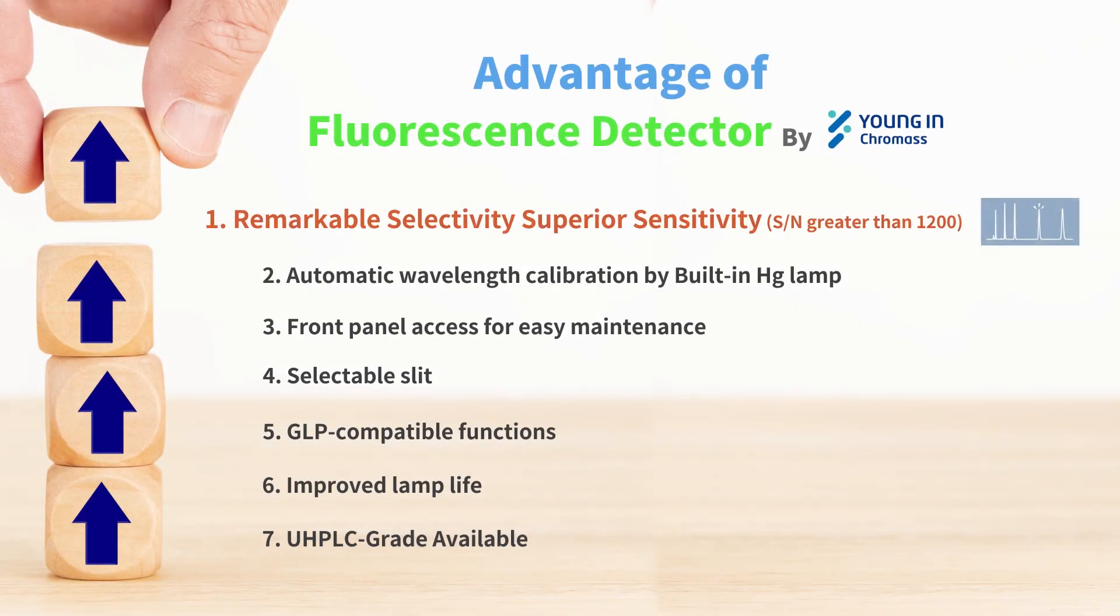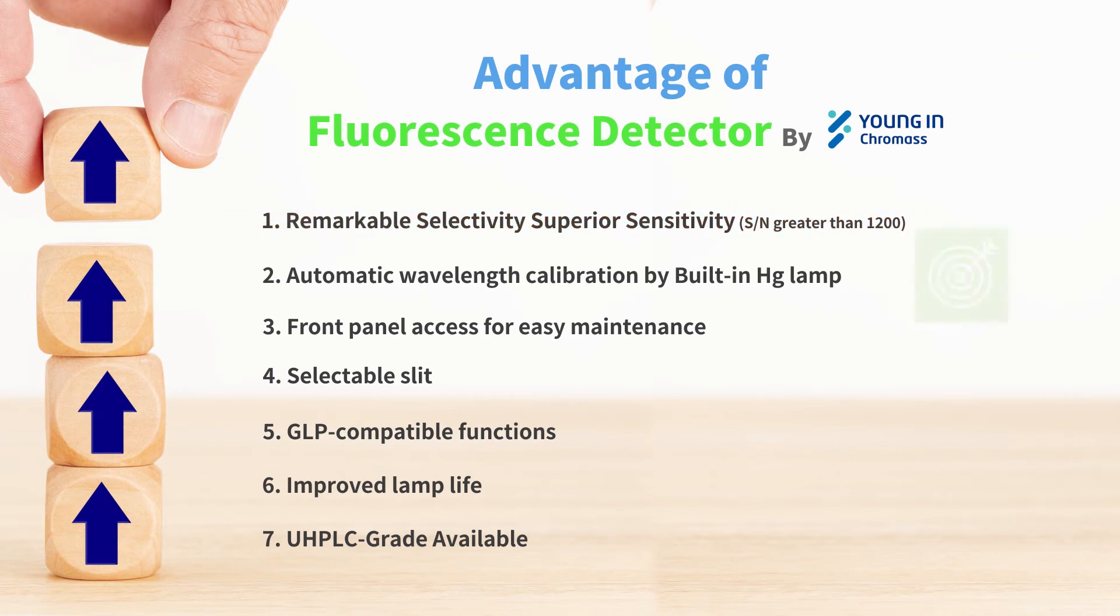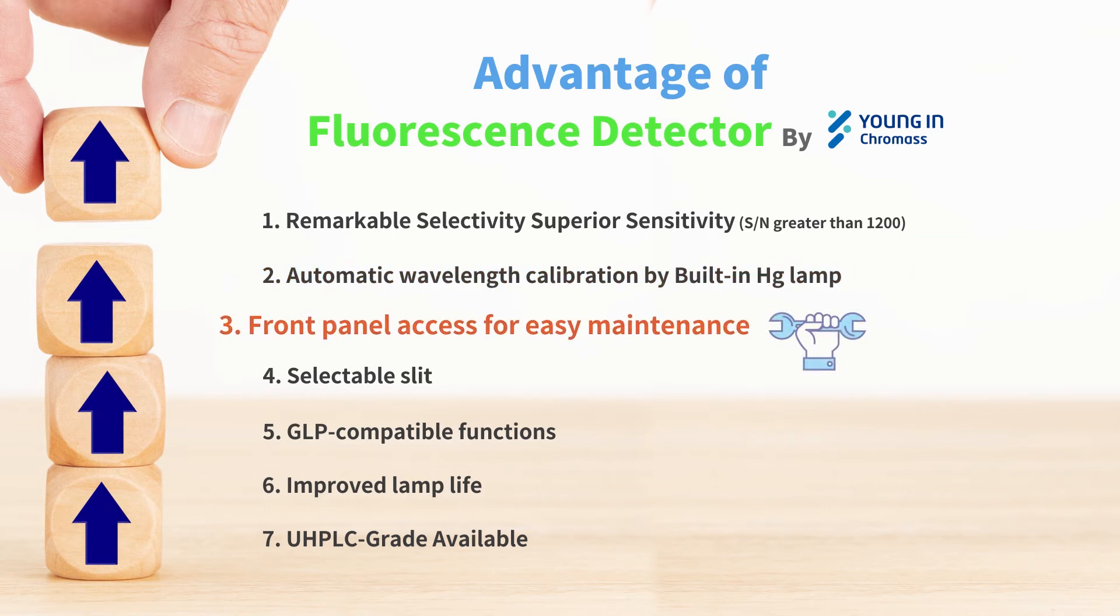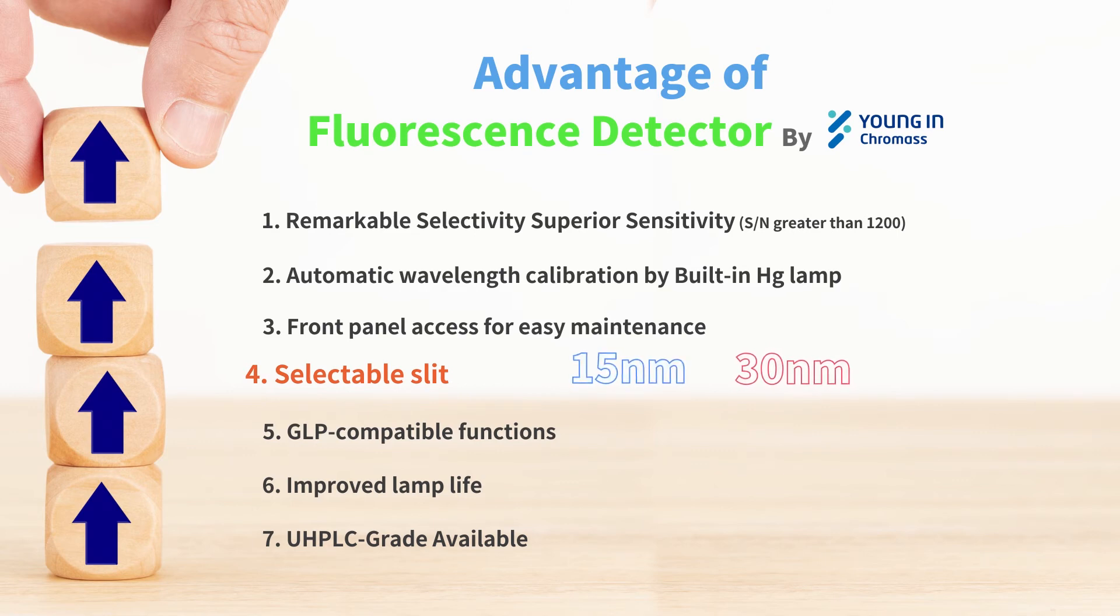Further to the selectivity and sensitivity as major advantages, our fluorescence detector provides automatic wavelength calibration through the built-in mercury lamp to ensure reliability. The major serviceable parts, such as positional adjustment of xenon lamp and flow cell replacement, are facilitated through front panel access for easy maintenance. The slit of the emission side monochromator is selectable between 15 nanometers and 30 nanometers for higher sensitivity.